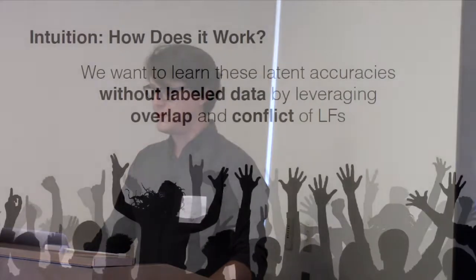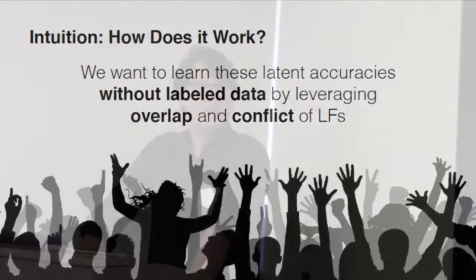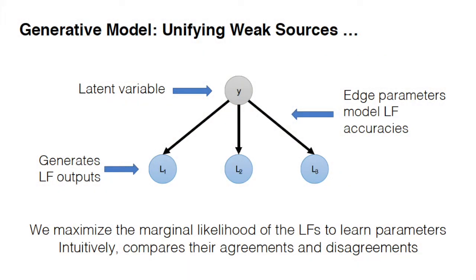Even in domain expert settings, there is quite a bit of variability or noise. And you'd like to reason about that in a principled way. So what the generative model sets out to do is to learn these latent accuracies without access to labeled data, by leveraging the degree to which labeling functions votes, the label matrix, overlaps and conflicts.